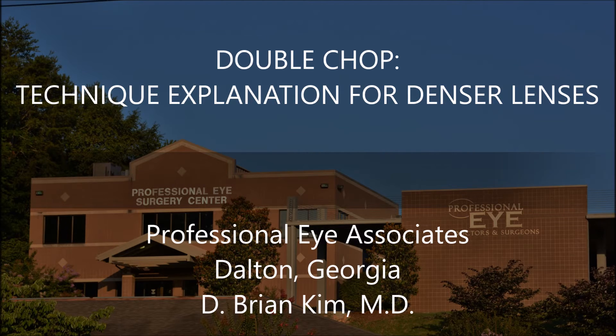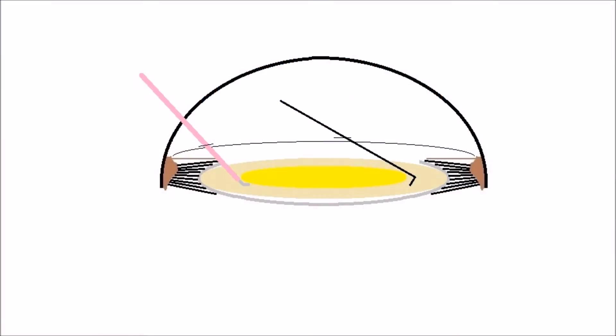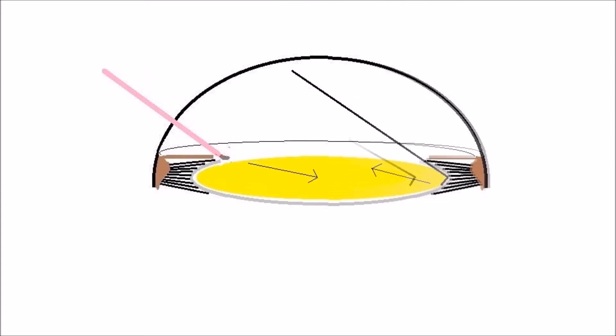If you look at my previous videos, the double-chop maneuver is when you place the chopper out to the level of the equator in typical horizontal chopping fashion, but then you place the phaco tip deep into the epinuclear material sub-incisionally at the level of the equator. You bring both instruments to the middle and you fracture the lens.